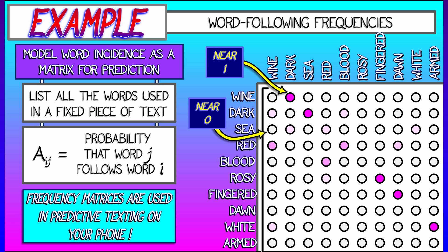These types of matrices are used all over the place. You could imagine it being used for predictive texting on your phone, trying to predict what word you're going to type next.